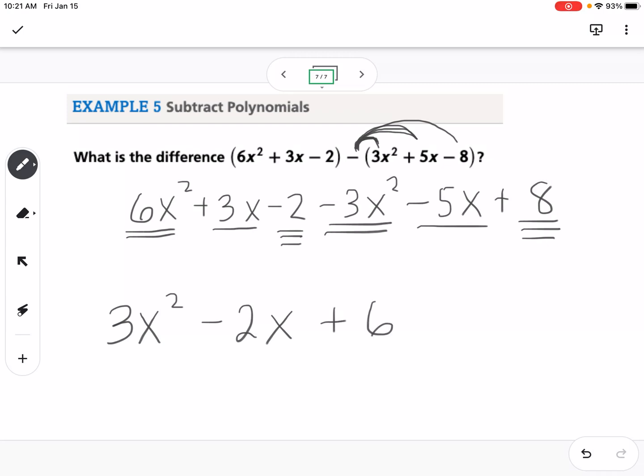So when you're subtracting, it helps to distribute that negative and then combine your like terms. Okay? So that is section 7-1.